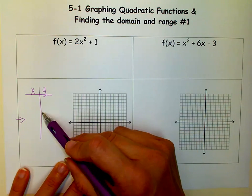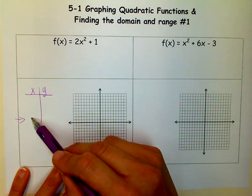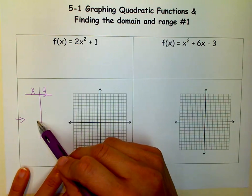So, to find the vertex, we first find the axis of symmetry, because it's that x-coordinate of the vertex.